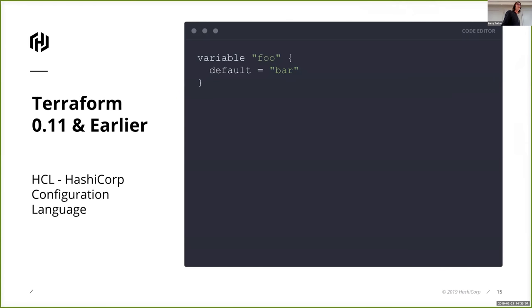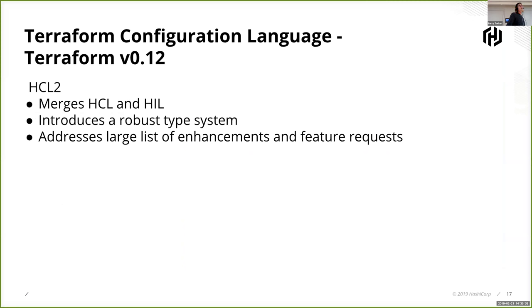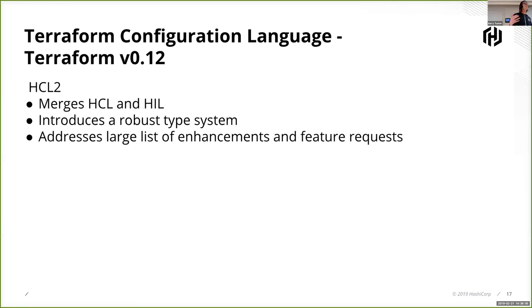So where did Terraform 0.12 come from and why did we need to make this change? Terraform is built out of two core components: HCL, the HashiCorp Configuration Language, and HIL, the HashiCorp Interpolation Language. These have always been two separate components, which has made it really difficult to add new features to the language. What we've done with Terraform 0.12 is completely change things - there's a brand new language, HCL2. The syntax is still the same familiar HCL, but technically we've merged HCL and HIL.